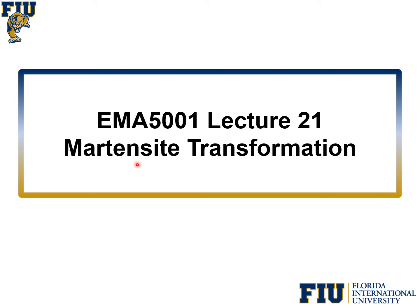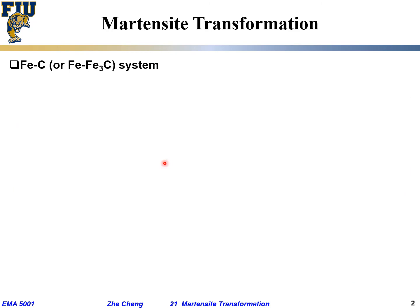Today we will talk about one last type of important solid-state phase transformation, which we call martensite transformation. It was specifically observed in the beginning for only one type of material, but people later found that similar phenomena occur not only in the iron-carbon system but in other systems as well. All these are called martensite phase transformations, and the first observation was in the iron-carbon system.